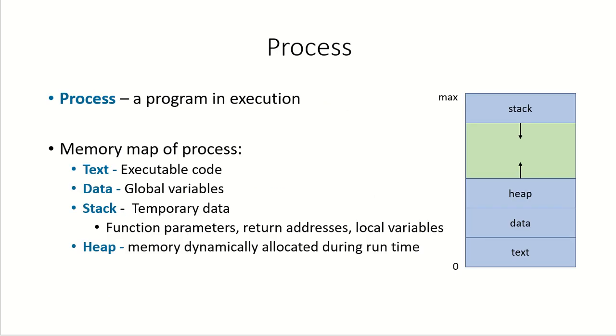So what is a process then? A process is a program in execution. When this process goes into the RAM, each process is assigned a memory map. There is a memory map of the process and this memory map is shown here.